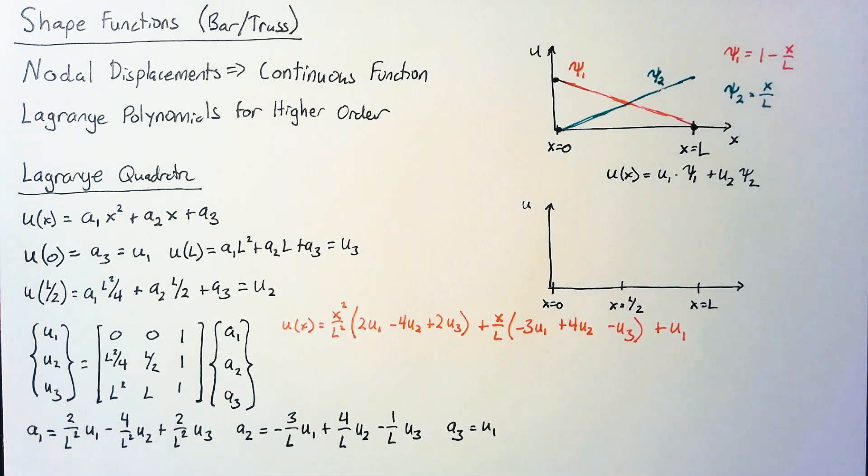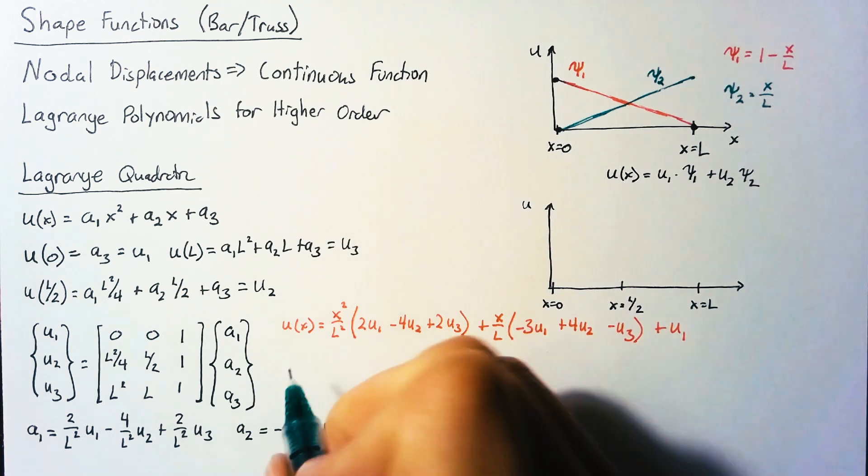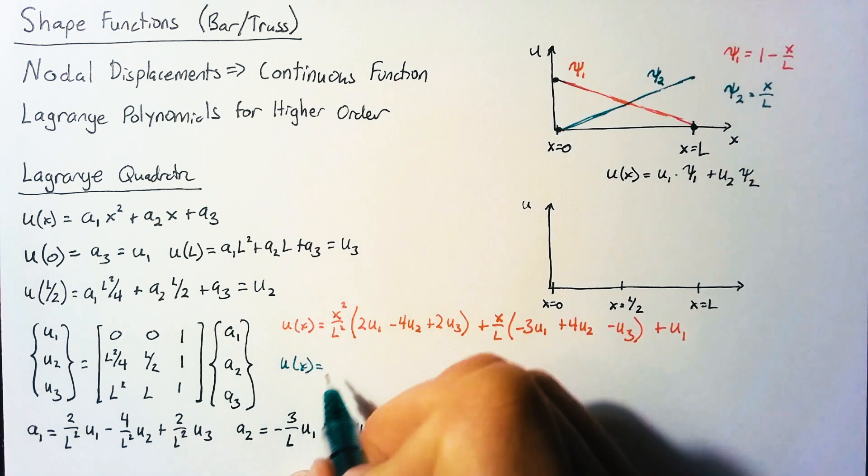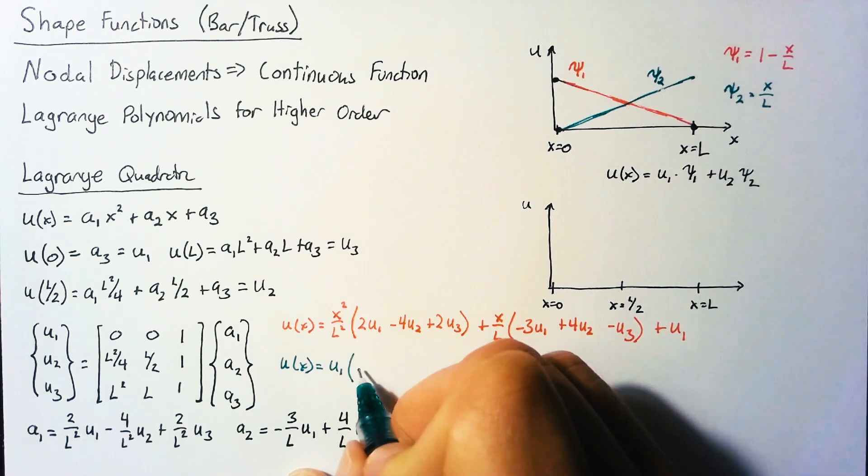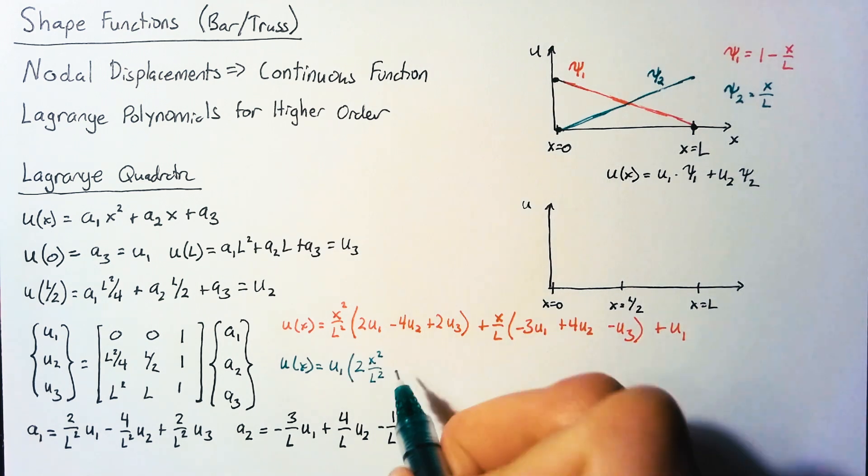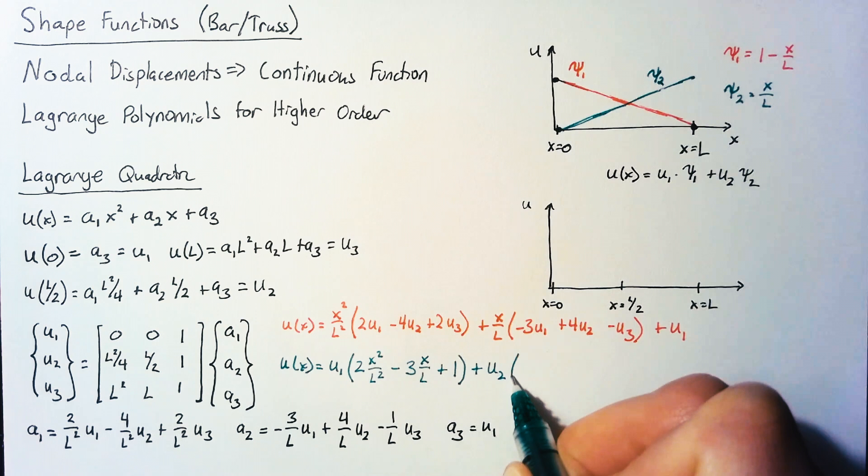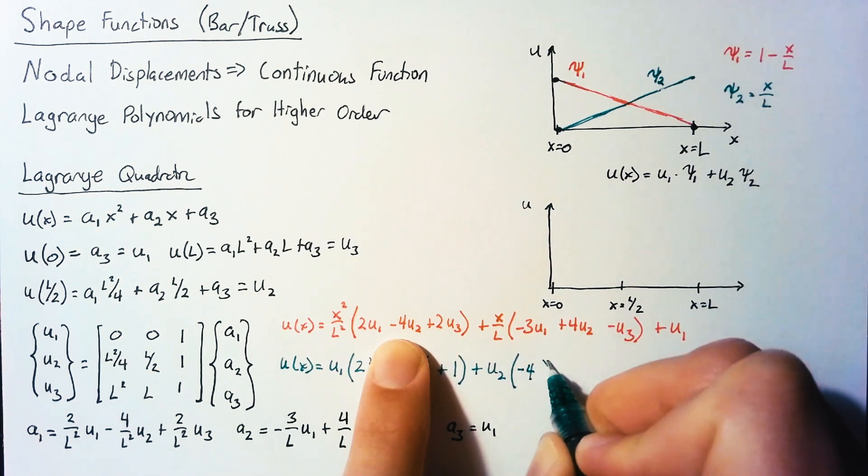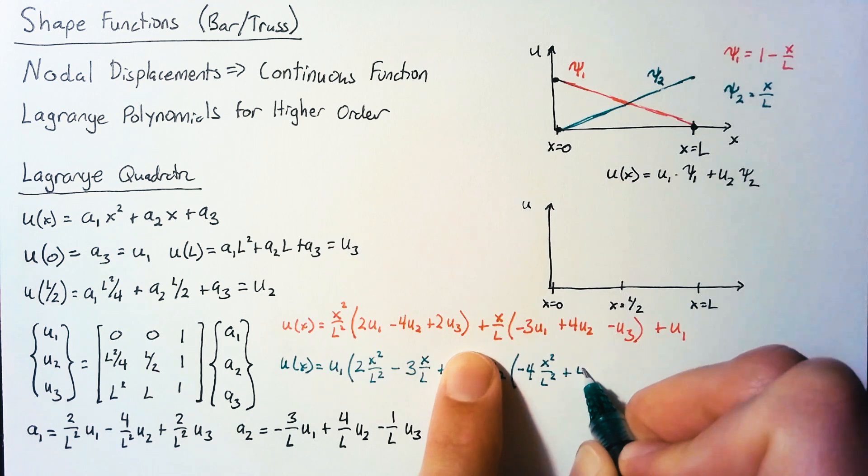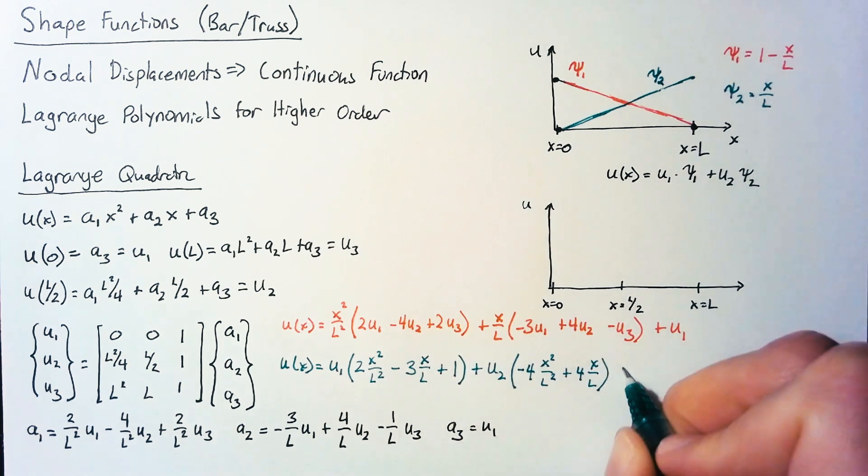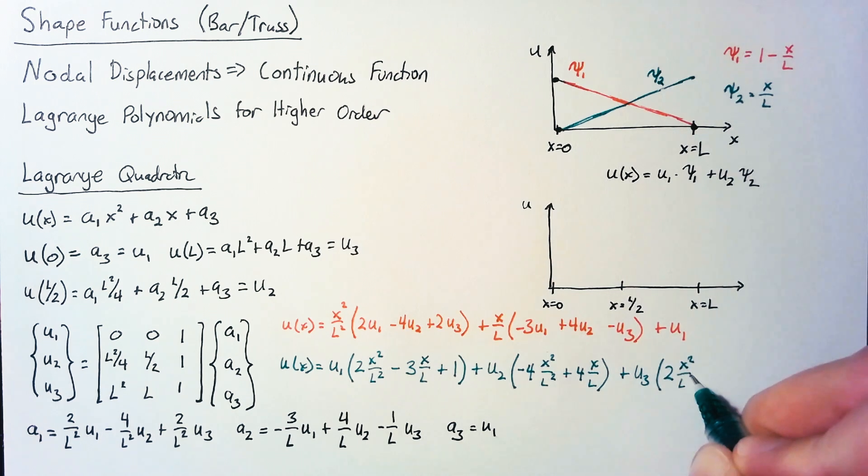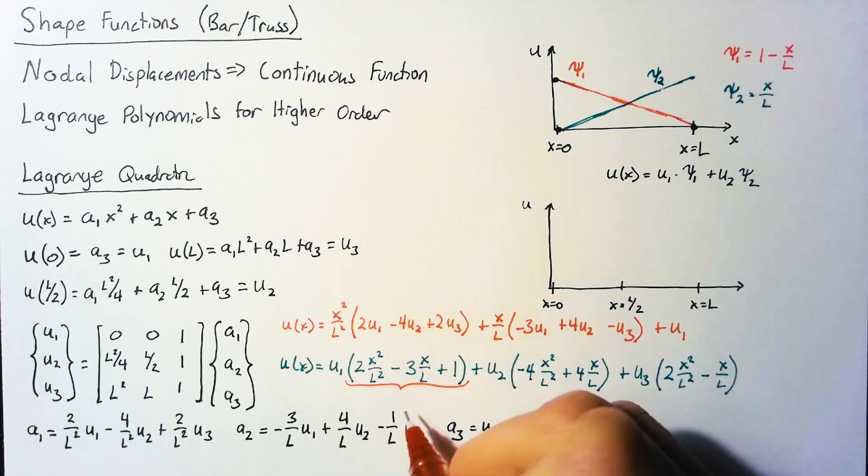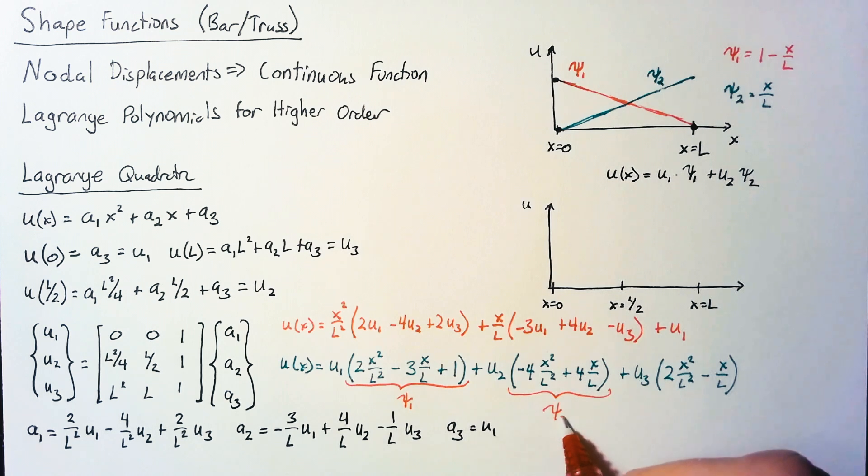Now, to get our shape functions, all we really need to do is rewrite this so that we're grouping our u1, u2, and u3 together. So our u of x here is going to be u1 multiplied by 2 times x squared over l squared minus 3x over l plus 1. u2 is going to have minus 4x squared over l squared plus 4x over l. And then finally, u3 has 2x squared over l squared minus x over l. This function here is psi1, this is psi2, and this is psi3.